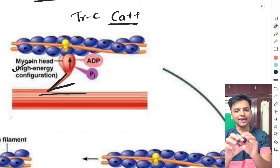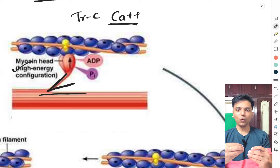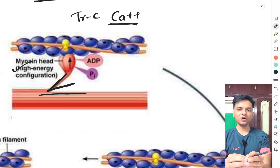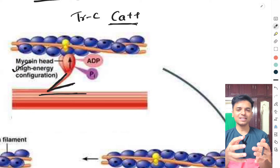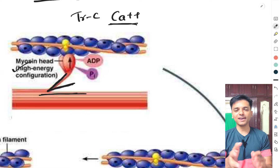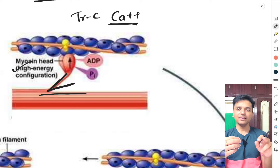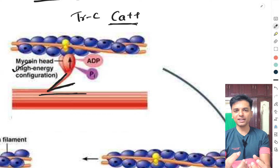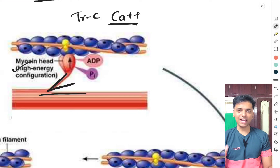The troponin-tropomyosin complex covers the active binding sites on the actin molecule — these sites, when uncovered, allow the myosin head to bind. This is why troponin and tropomyosin together are called the relaxing proteins of the muscle. When calcium binds to troponin C, a conformational change in the entire troponin molecule causes the tropomyosin to move laterally, uncovering the active binding sites on actin.